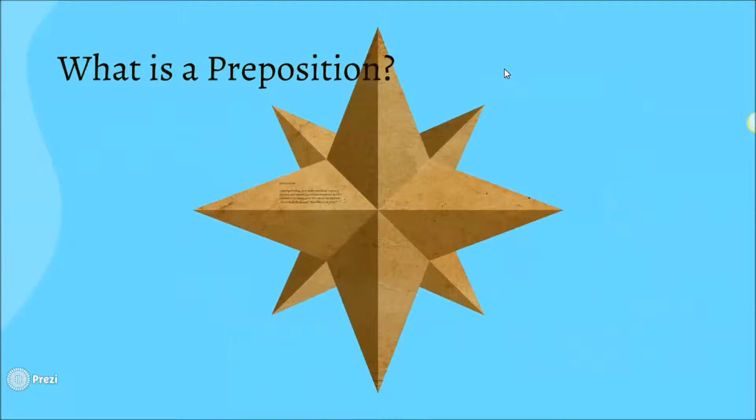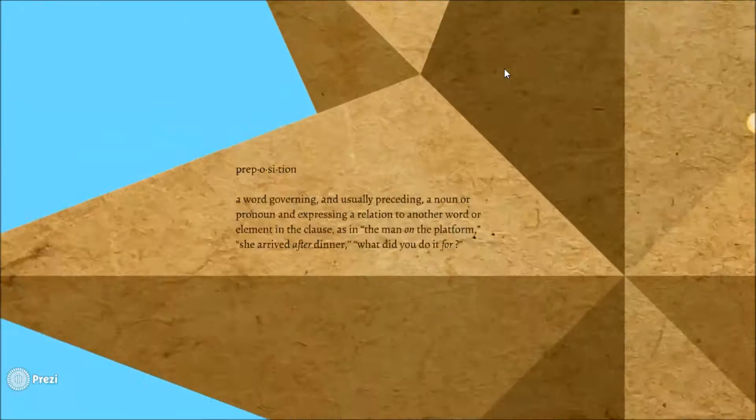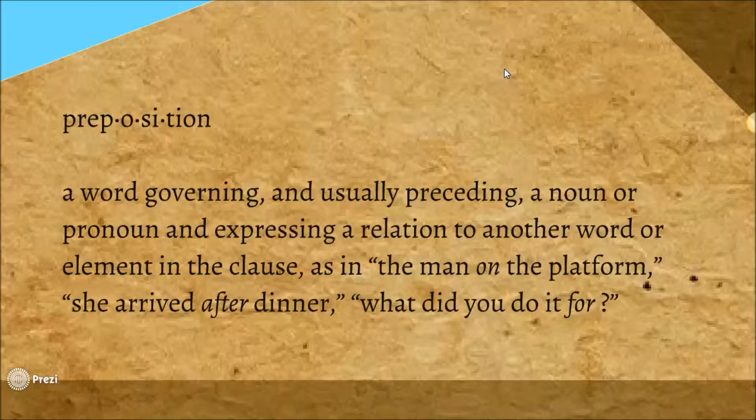So first of all, what is a preposition? The dictionary says that a preposition is a word governing and usually preceding a noun or pronoun and expressing a relation to another word or element in the clause, as in the man on the platform, she arrived after dinner. So basically that means it's describing where an object is related to another object, or it could also mean in time, like this happened after the dog ate the chocolate.